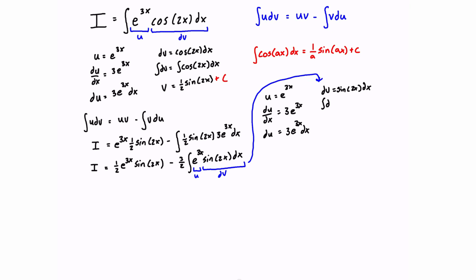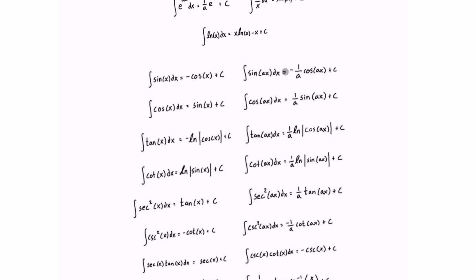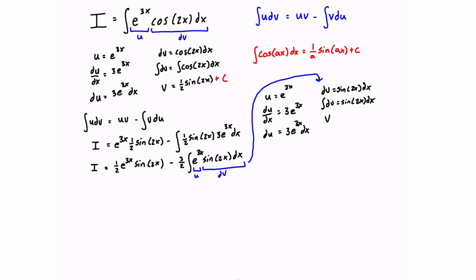We integrate dv — so dv equals sine of 2x dx. Checking the integral table, the integral of sine(ax) dx equals negative 1 over a times cos(ax) plus c. So for us, v equals negative 1/2 cos of 2x. We're dropping the +c again for now to avoid accumulating messy constant terms.